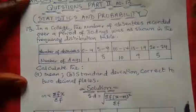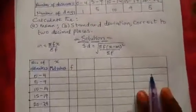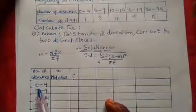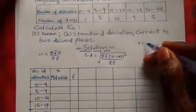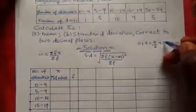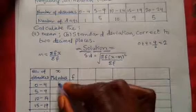In the table, the first column is the number of absentees from 0–4 down to 20–24. The next thing is to get the mid values, because for grouped data we need a representative for each class — called the mid value or class mark. To get the class mark, we add the lower and upper class limits and divide by two. So for 0 to 4: zero plus four equals four, divided by two equals two. We place two as the mid value.